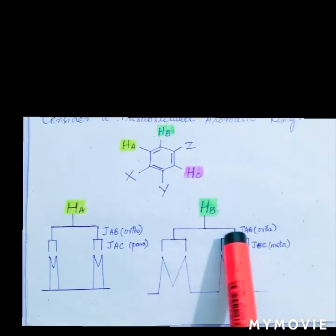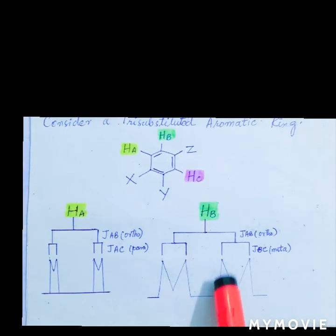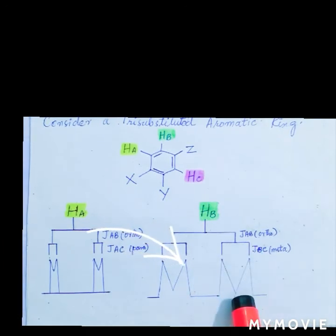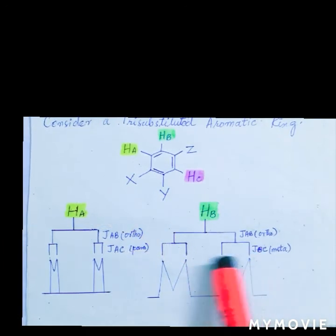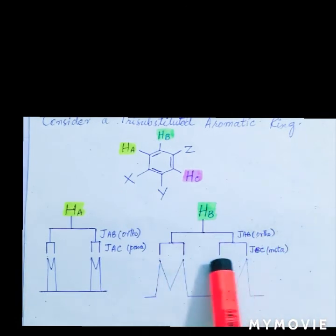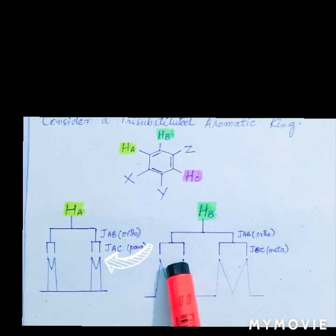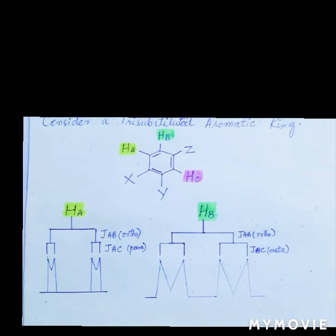And that's why the peaks of HB are wider. As you can see, the M type signal which is showing the wider peaks, and HA is showing very close peaks, just because of para and meta values difference.